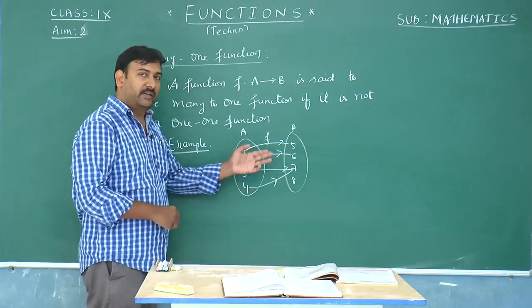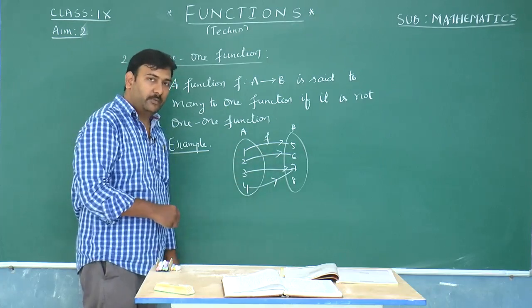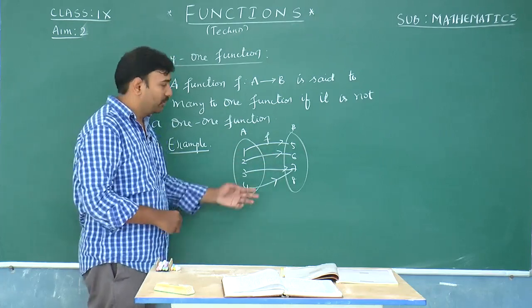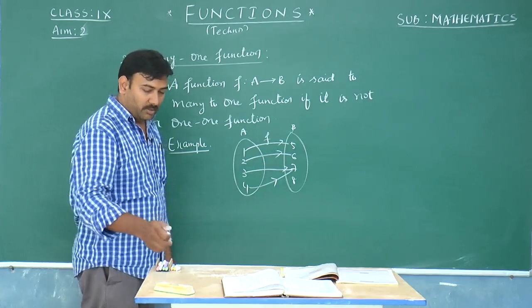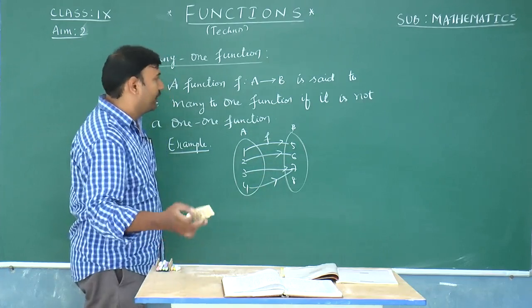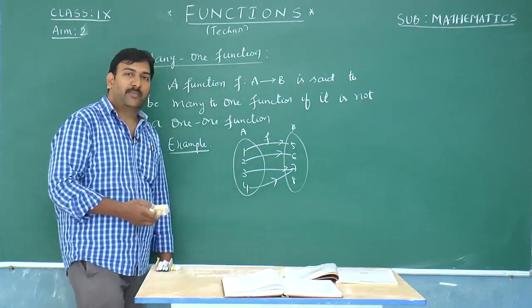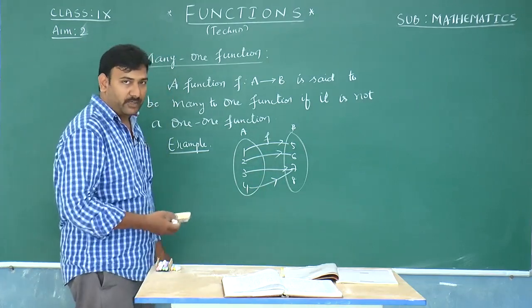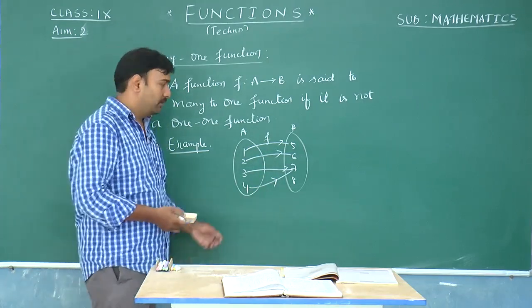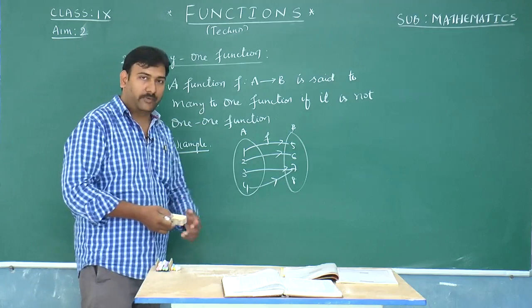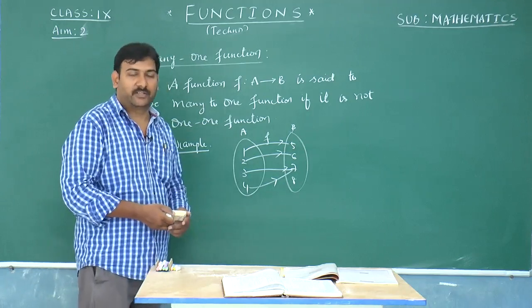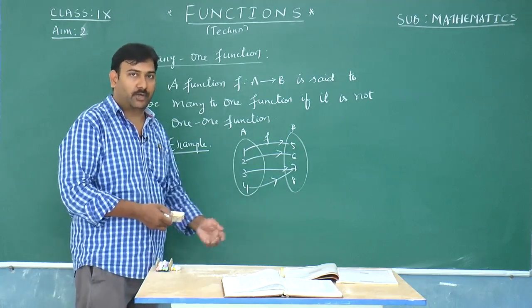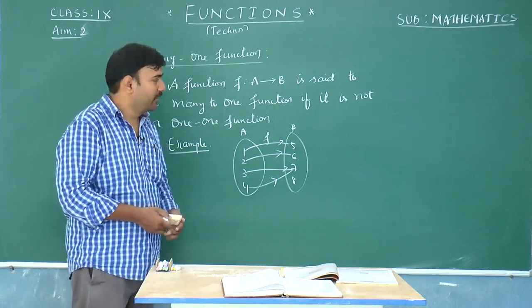A function which is not a one-to-one function is said to be a many-to-one function. To find the number of many-to-one functions, the formula we use is: total number of functions minus the number of one-to-one functions.